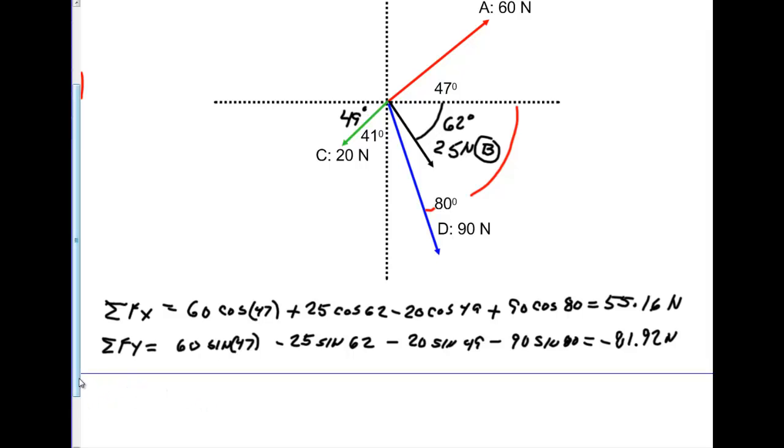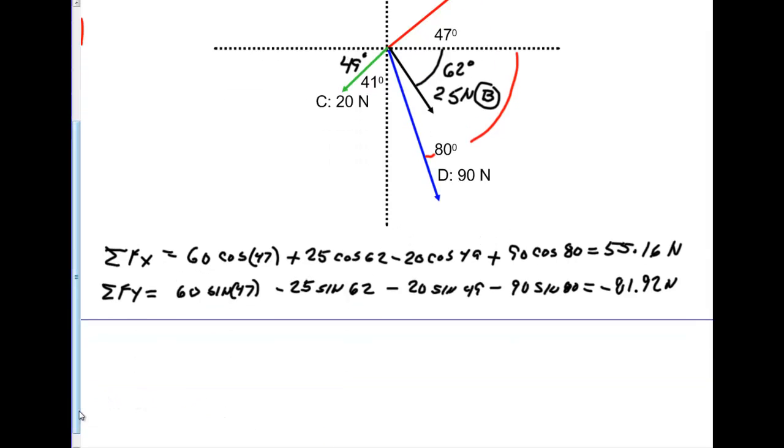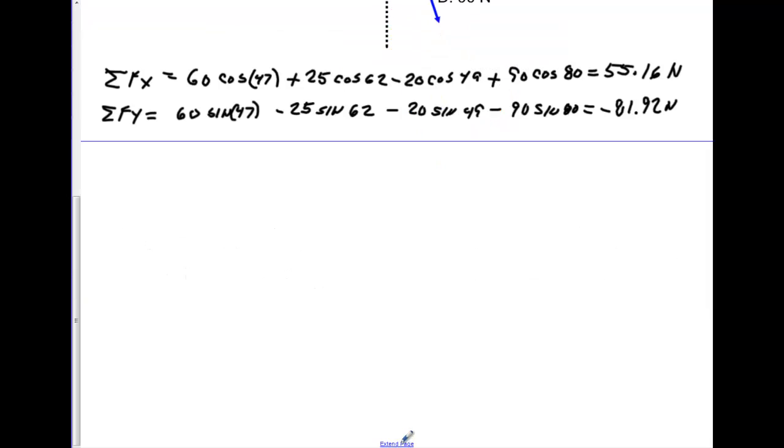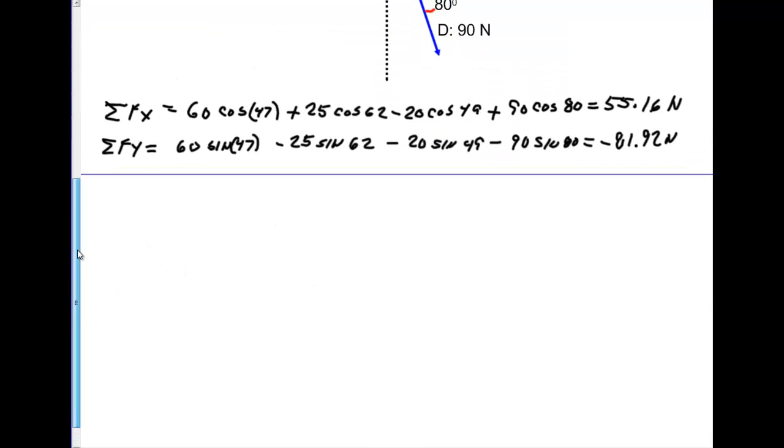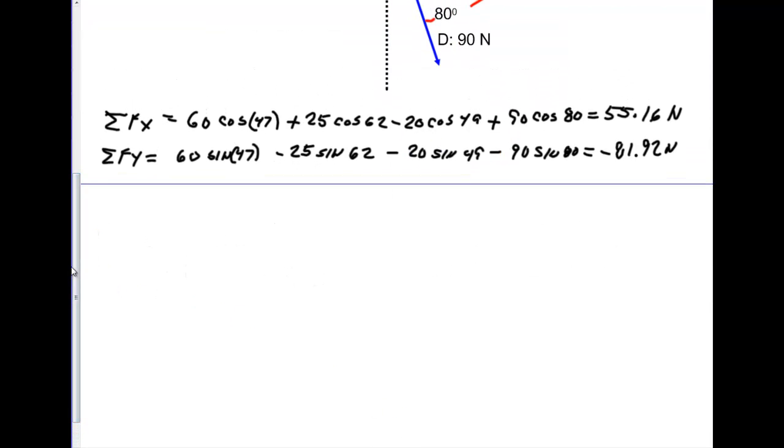All right. So now I'll scroll down a little bit, see if I can give myself a little bit more space. And what I like to do at this point would be actually draw the vectors so I know where they're being located. I draw my x. We're going to come over 55.16 this way. Then we're going to come down 81.92 this way. My resultant vector is going to go from here to here. Again, tail, tail. And we always end up with head, head.